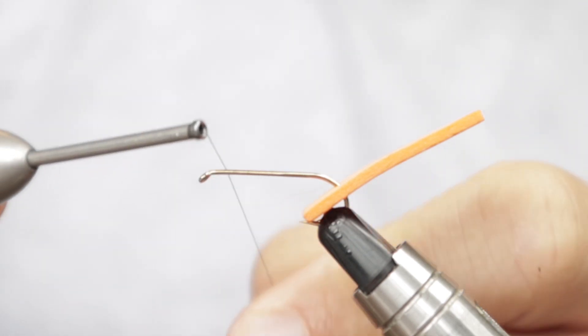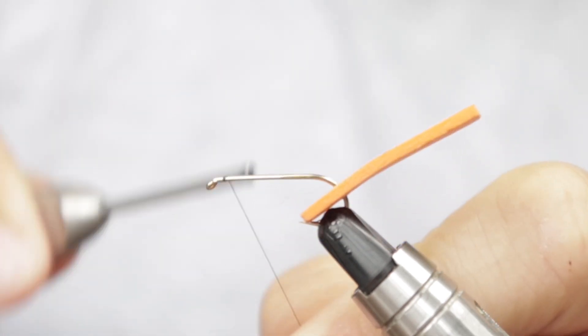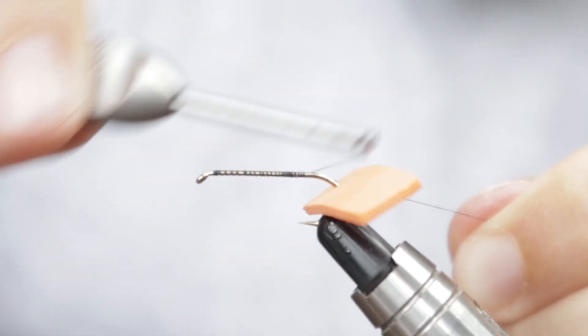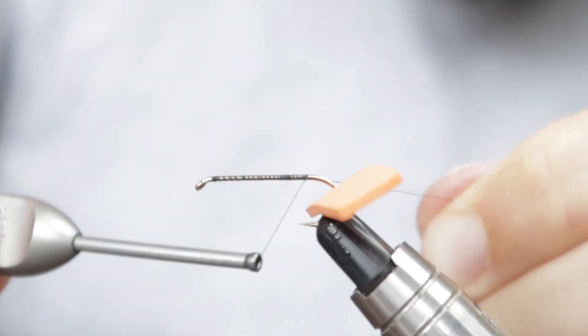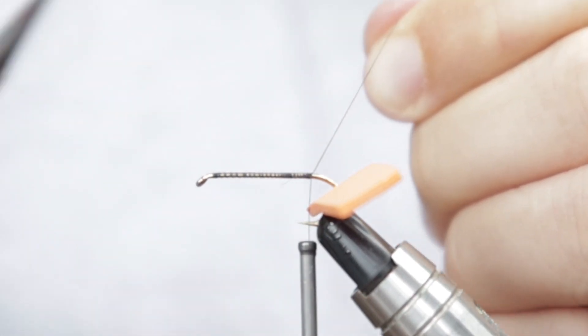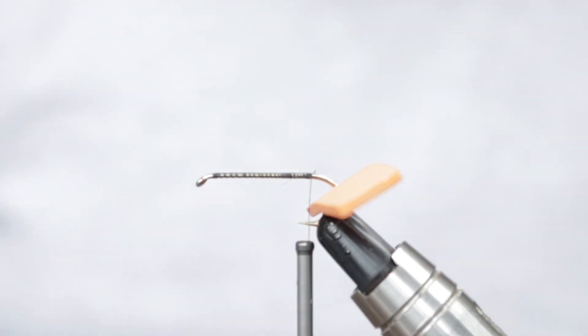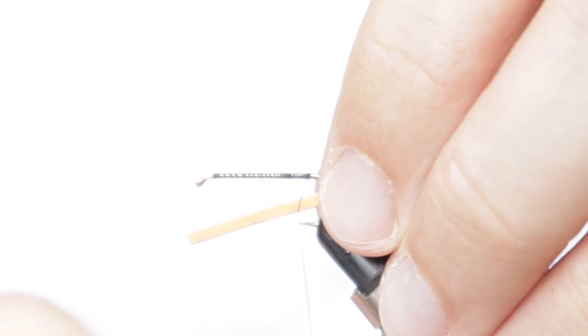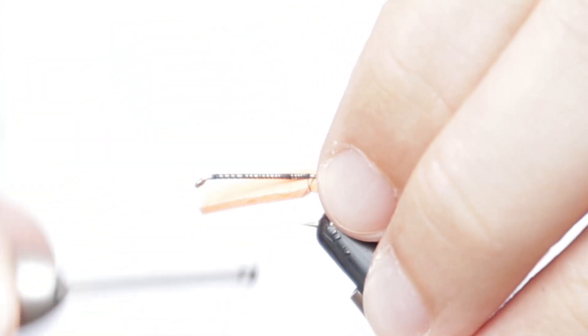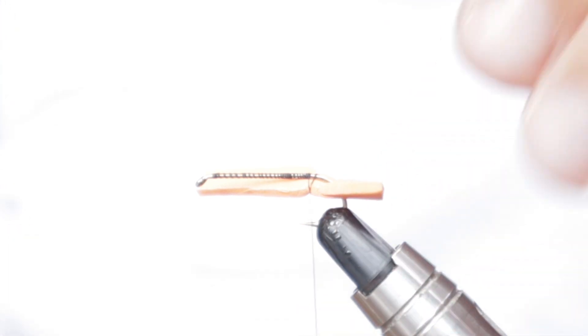I'm going to come in with some black UNI 8/0 that I've put some wax on, just at this point here, and start to come down the shank. Run the thread down to roughly where that barb is that you'll probably flatten at your leisure. I'm just going to snip this away and then bring the foam around and get a turn in just to lock that on in that direction.